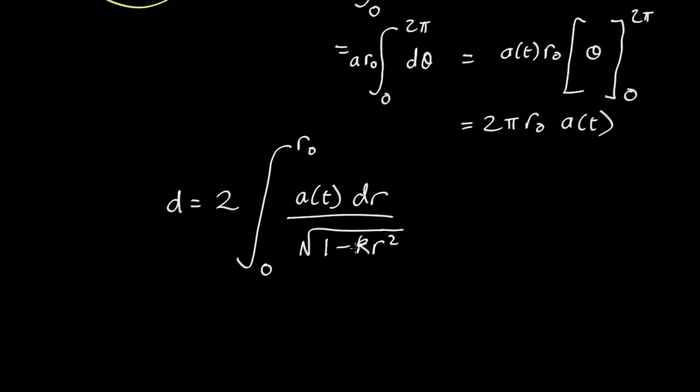So what we'll do is set k equal to plus 1 or minus 1 and look at the solutions for those two cases. If k is some other positive value it behaves like the k equals plus 1 case with different constants. Likewise if k is negative but not minus 1 it's just like the minus 1 case but with different constants. So we'll just take k equals plus 1 and k equals minus 1.